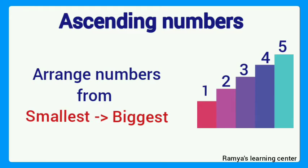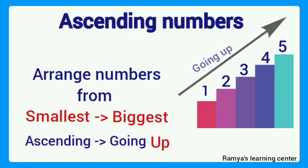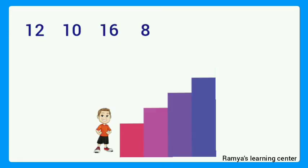Ascending means going up — smallest number to biggest number. For example, here the boy wants to go up, but for that we should arrange these given numbers in an ascending order. So we arrange the numbers moving from downstairs to upstairs.